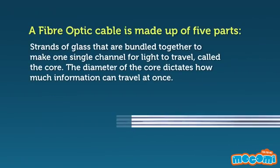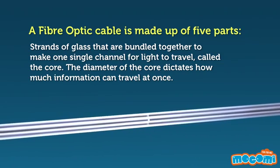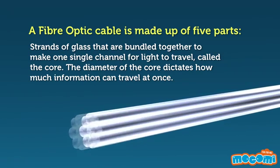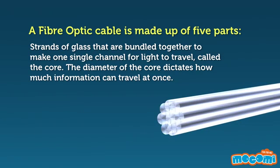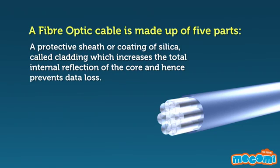A fiber optic cable is made up of five parts. Strands of glass are bundled together to make one single channel for light to travel, called the core. The diameter of the core dictates how much information can travel at once. A protective sheet or coating of silica, called cladding, which increases the total internal reflection of the core and hence prevents data loss.